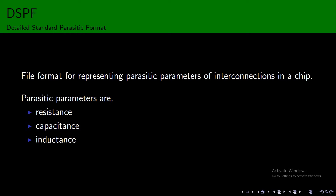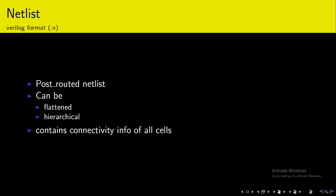The next one is the netlist, which is in Verilog format, that is the .v file. It is a post-routed netlist dumped as a .v file as output. They can be flat or hierarchical, and contain the connectivity information of all cells.